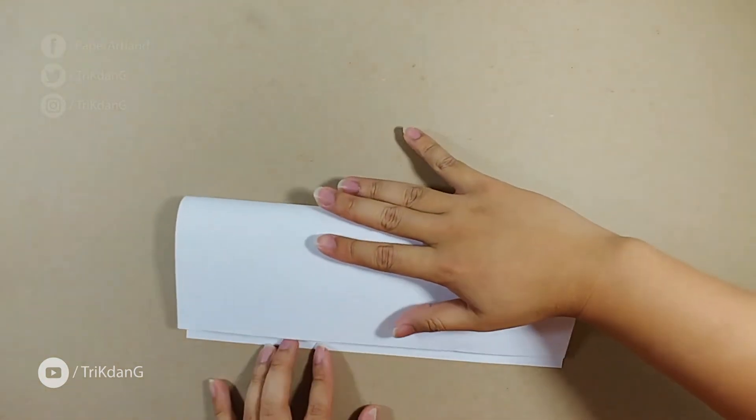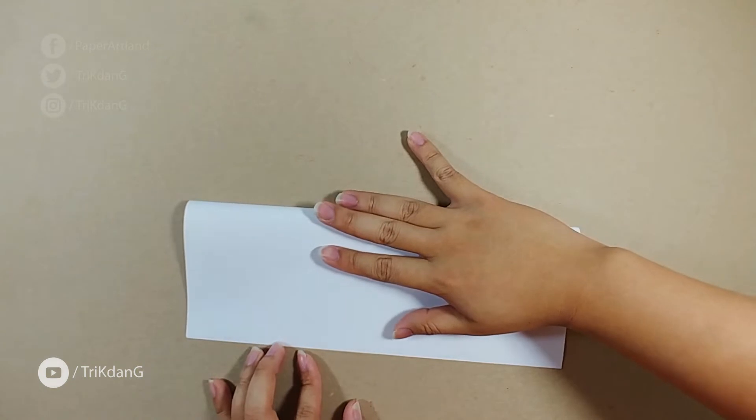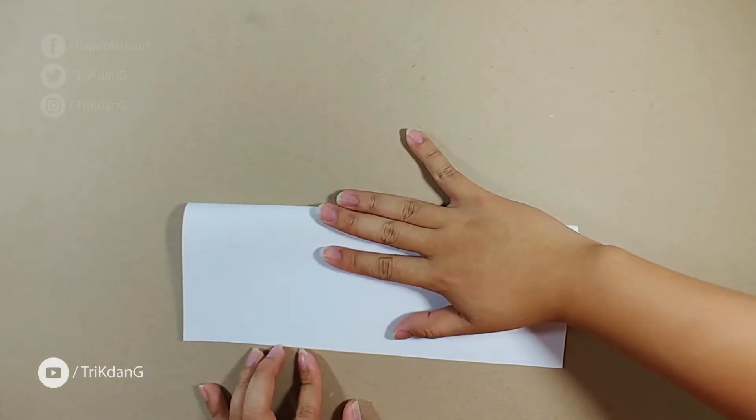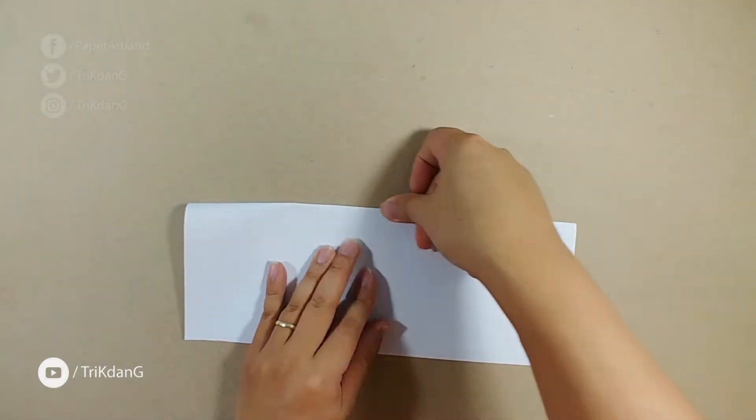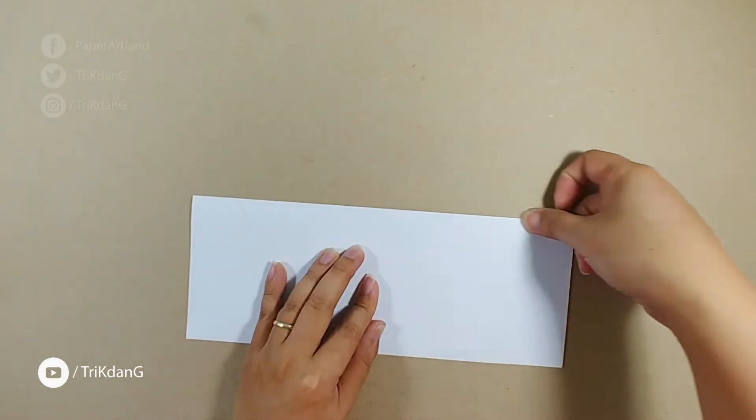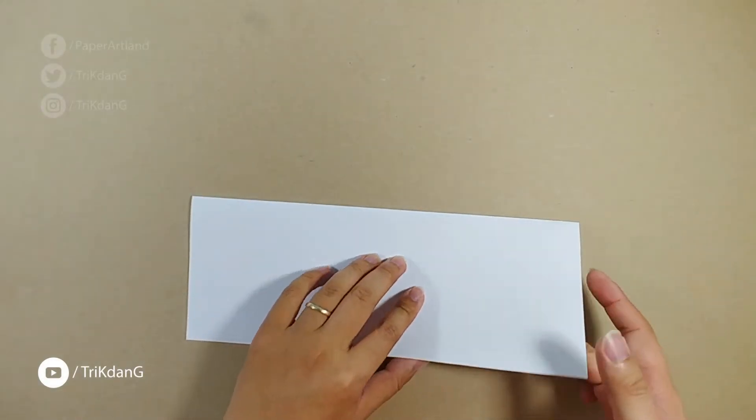To make this paper airplane, you need a piece of just letter size paper. If you don't have letter size paper, use A4 paper and it should work well too. Now, first step, let's fold the paper in half this way. Then unfold the paper.